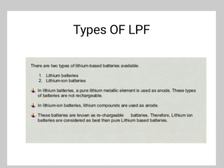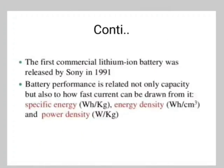There are two types of lithium batteries available: lithium batteries and lithium-ion batteries. In lithium batteries, a pure lithium metallic element is used as the anode — these are not rechargeable. In lithium-ion batteries, lithium compounds are used as the anode — these are rechargeable. Lithium-ion batteries are considered the best pure lithium-based batteries. The first commercial lithium-ion battery was released by Sony in 1991. Battery performance relates not only to capacity but also to how fast current can be drawn — specific energy, energy density, and power density.